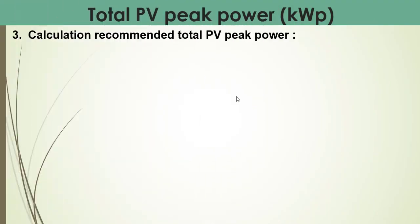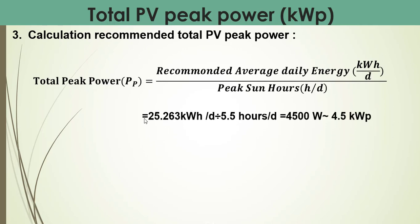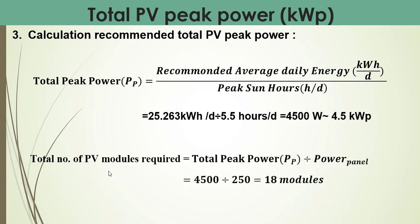In order to calculate the total photovoltaic peak power, we use the formula: required daily energy in kilowatt hours per day divided by the peak sun hours per day. This was calculated in the previous lecture, divided by peak sun hours, which equals 4,500 watts — approximately 4.5 kilowatt peak power. The number of required modules equals total peak power divided by the peak power of each module, giving us 18 modules required for this photovoltaic system.